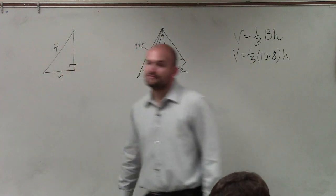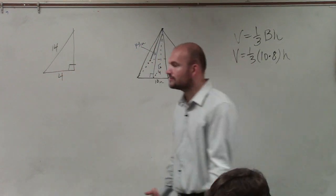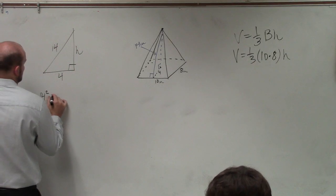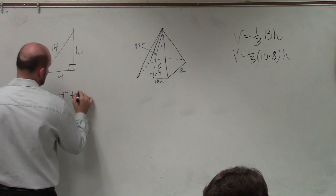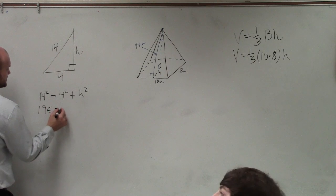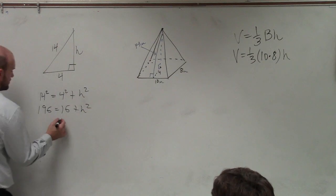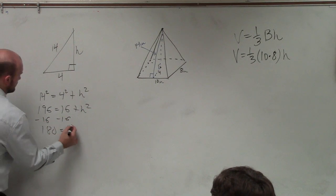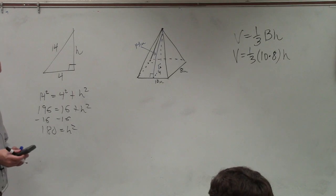So now, if I have two sides of a triangle, can I figure out the third side? What's the right triangle? Yeah, of course I can. We'll call that h. So I'll say 14 squared equals 4 squared plus h squared. 14 squared is 196 equals 16 plus h squared.